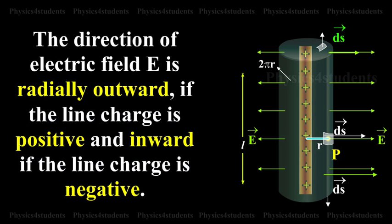The direction of electric field E is radially outward if the line charge is positive and inward if the line charge is negative.